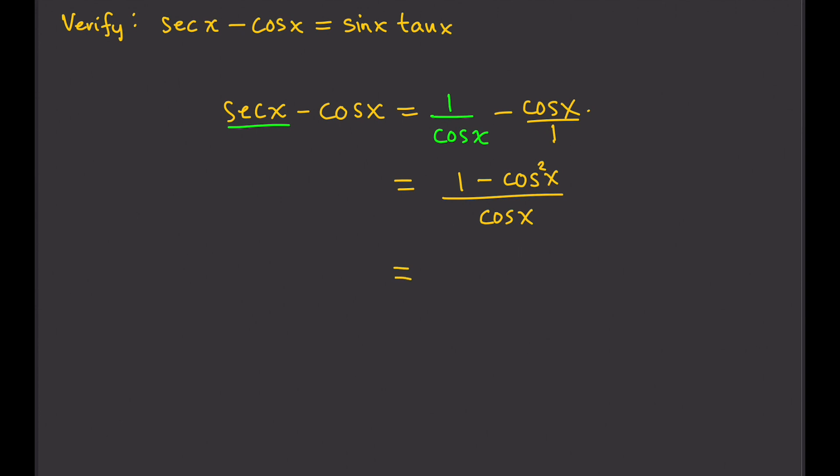Next, we know that this is part of a trigonometric identity, namely Pythagorean identity. We know that this is equal to sine squared x. If you remember, let's write that here. Sine squared x plus cosine squared x equals 1.